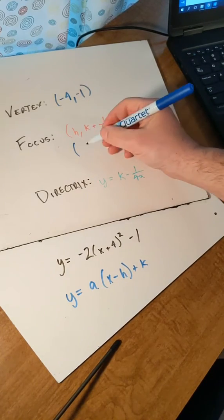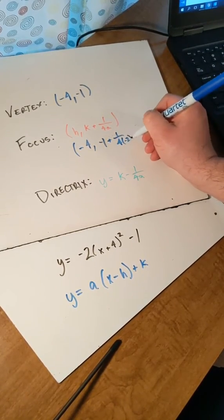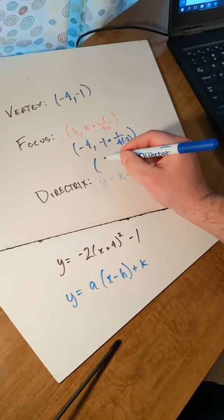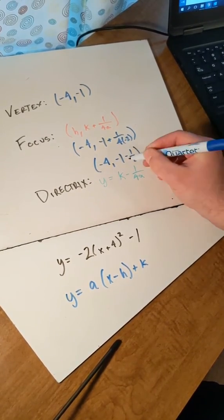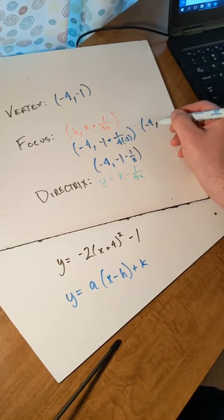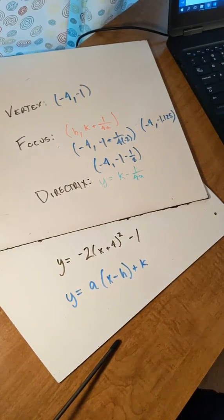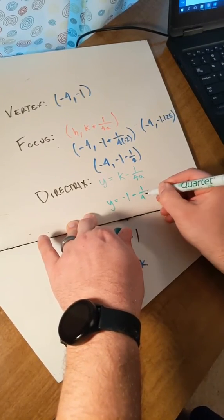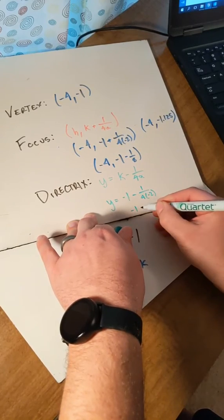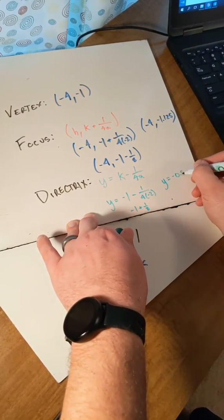Next, the focus is at h, which is negative 4, and k plus 1 over 4 times negative 2. So we get negative 4, and then negative 1 plus 1 over negative 8, which is negative 1 minus 1 eighth. If we plug that in a calculator, that's negative 4 and negative 1.125. And then lastly, y equals k minus 1 over 4a, which is negative 1 minus 1 over 4 times negative 2. That gives us negative 1 plus 1 eighth, which ends up being y equals negative 0.875.